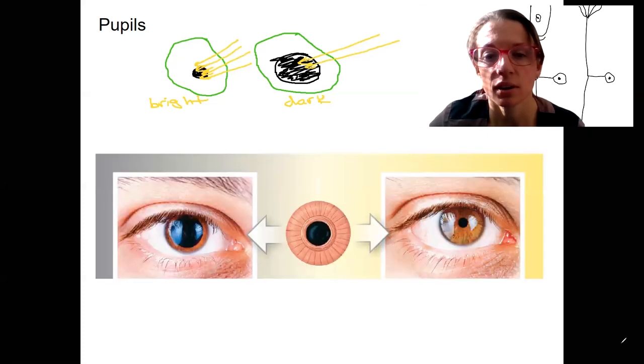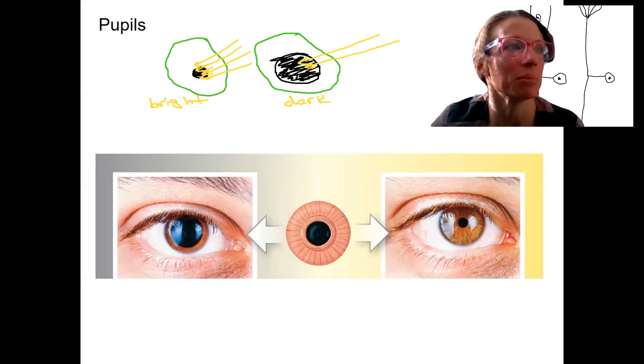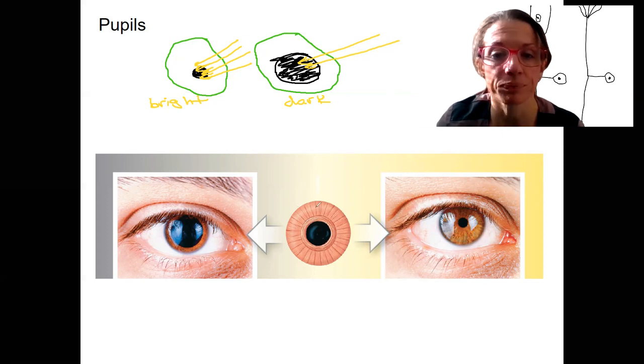So this is the same thing here, right? But we're going to, of course, name some of the muscles that control this. So actually the controlling of this pupil size is regulated by muscles that either dilate or constrict the pupil area.